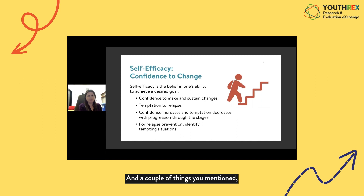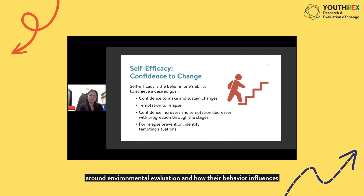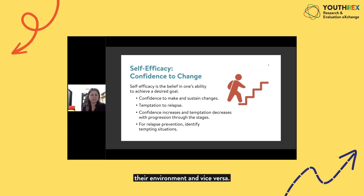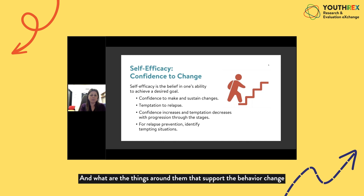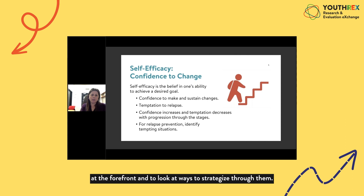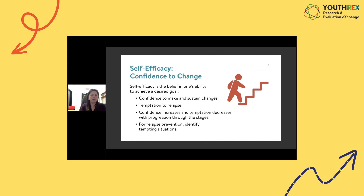Vivian notes that some of what Miles mentioned — around environmental re-evaluation — will be discussed in part two: how a young person's behaviour influences their environment and vice versa, what supports the behaviour change, and what hinders it. This includes peer groups that may not be a positive influence or family members who may attempt to sabotage the behaviour change.